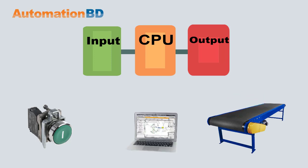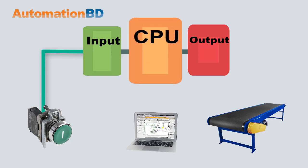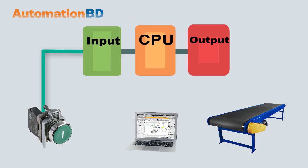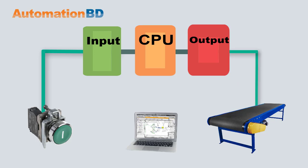First, a programmer loads a program onto the CPU. Then, when some input signal comes in, the CPU processes the signal and through the output then runs the conveyor belt.